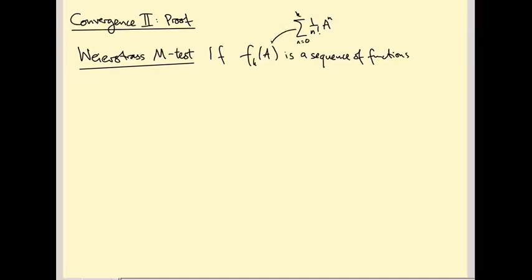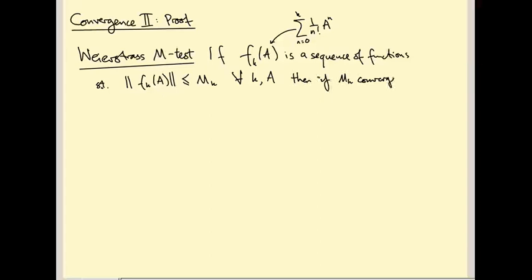If it's a sequence of functions such that the norm of F_k(A) is bounded above by M_k for all k and all A, where M_k is just a number for each k — so this upper bound holds uniformly in A — then if M_k converges to some value M, the sequence F_k also converges, and actually converges uniformly in A.